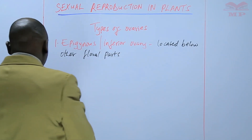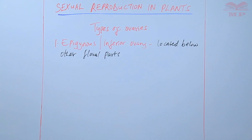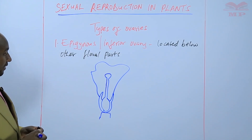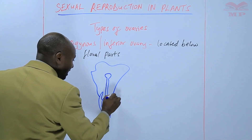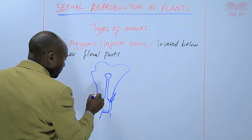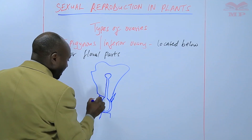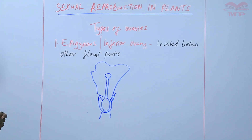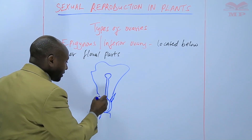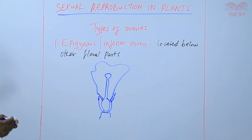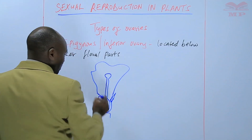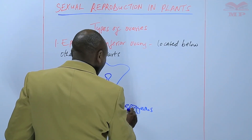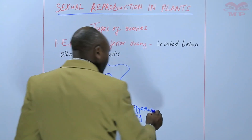You can have an illustration of the same — a diagram. This is an epigynous ovary because you can find that the other floral parts, such as the sepals, are at a higher position. The petals also are at a higher position than the ovary. So, this ovary is said to be inferior, located at a position below the other floral parts. This epigynous ovary is commonly found in flowers such as the apple.